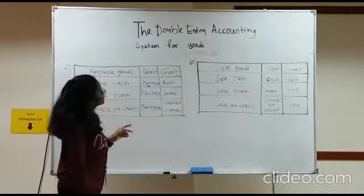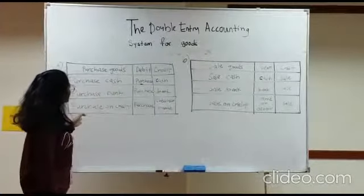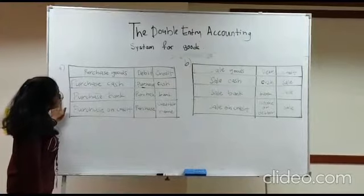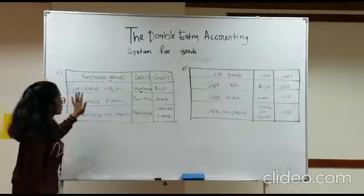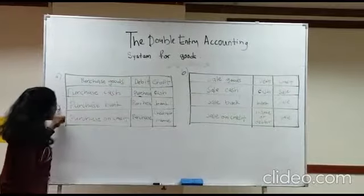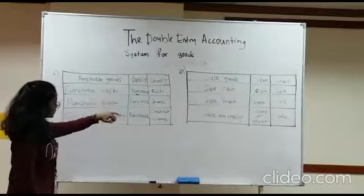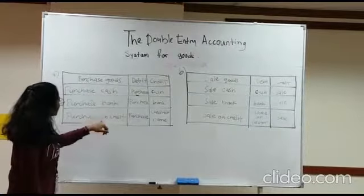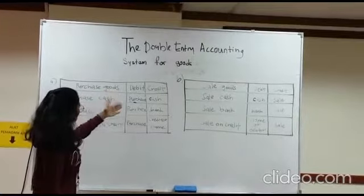I'm going to teach about the double entry system for goods. There are two types of goods: first one is purchased goods, second is sales goods. For purchase: purchase by cash — purchase will be at debit, cash will be at credit side. Purchase by bank — purchase will be at debit side, bank will be at credit side. Purchase on credit — purchase will be at debit side, and the creditor name will be on the credit side. All purchases will be at the debit side.